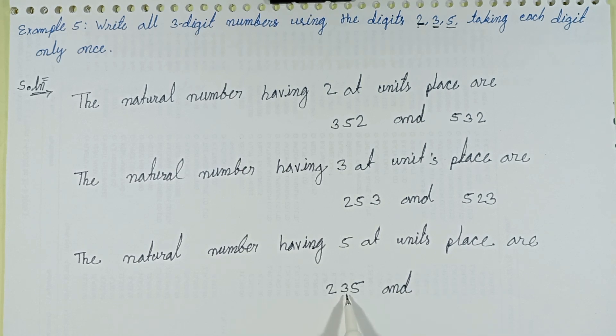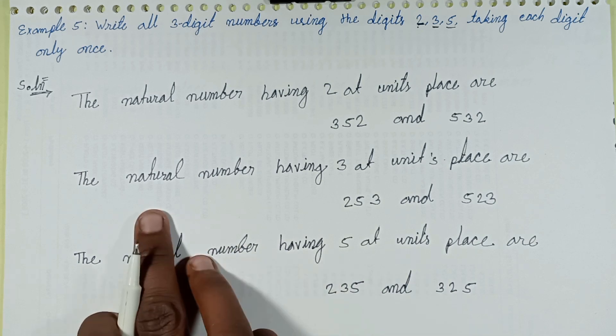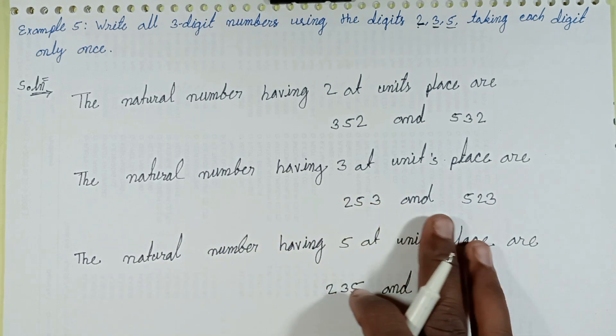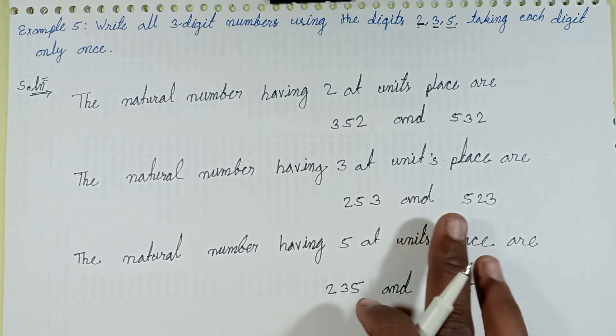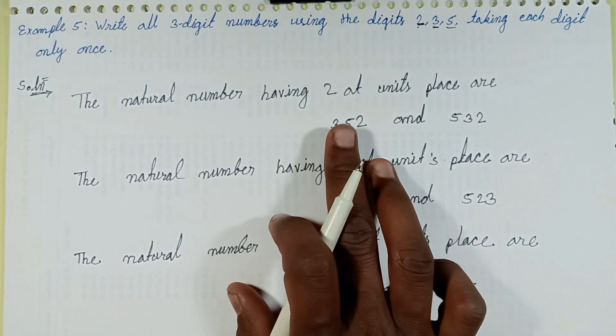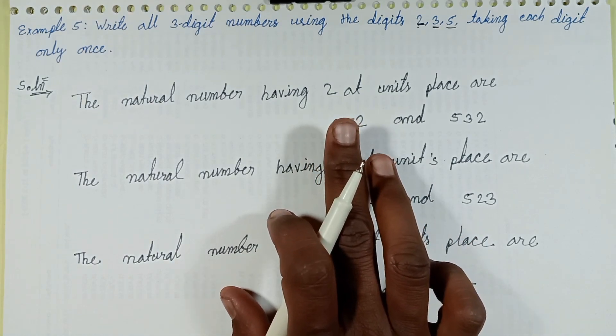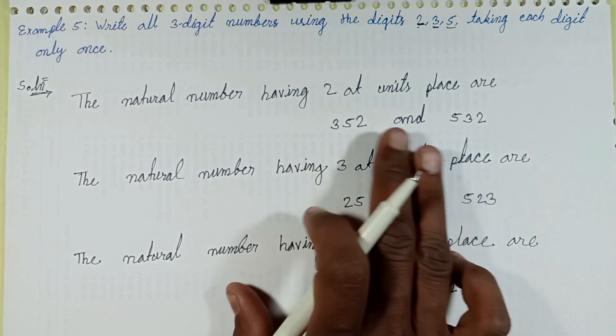When 2 replaces with 3 and 3 replaces with 2, first of all with 5 at units place, the upcoming 2 numbers are formed. Then put 3 at units place, the upcoming 2 digits give this number and this number. Then put 2 at units place for the upcoming 2 digits.